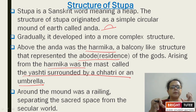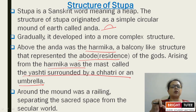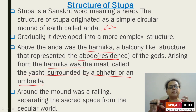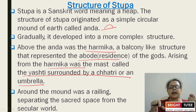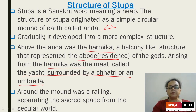The Harmika is a balcony-like structure which represented the abode and residence of the gods and goddesses. Arising from the Harmika was a mast called the Yasti, surrounded by a Chhatra or umbrella. The Chhatra served to protect the stupa from mist, light, heat, and the force of wind. The mound had a railing separating the sacred space from the secular world.